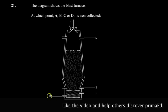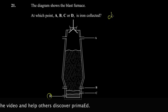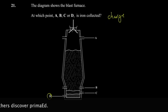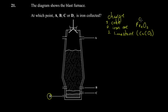A little recap on how the blast furnace works: you introduce the charge at the top. The charge, also called the burden, is the raw material. It's a mixture of: first, coke; second, iron ore (Fe₂O₃, iron three oxide); and third, limestone, which is calcium carbonate.